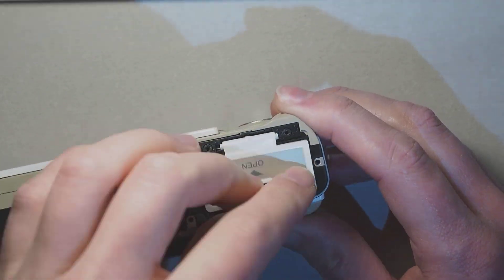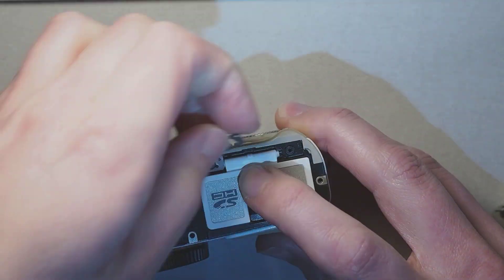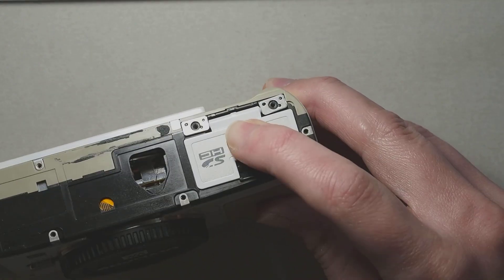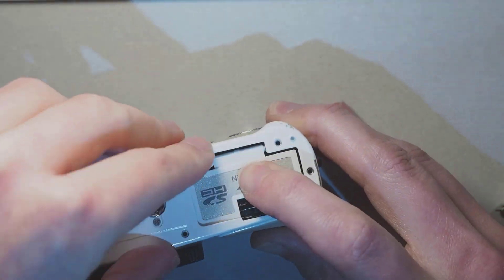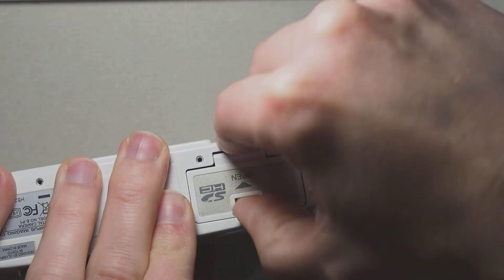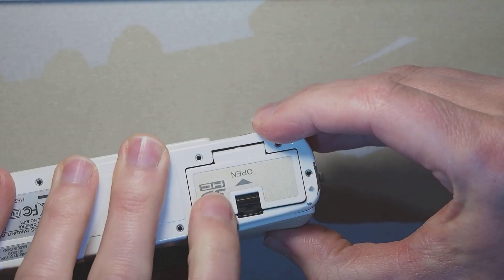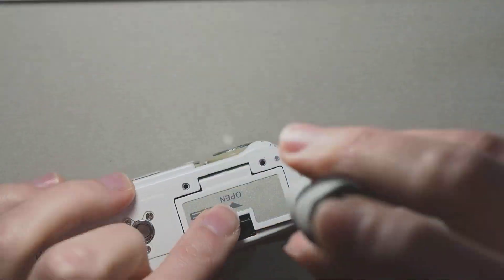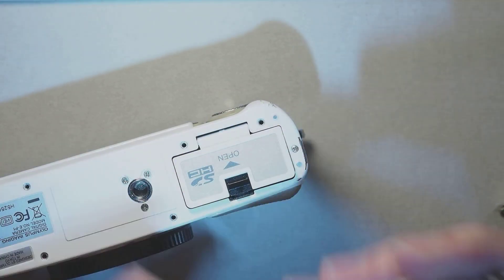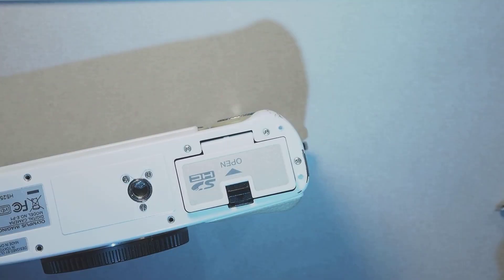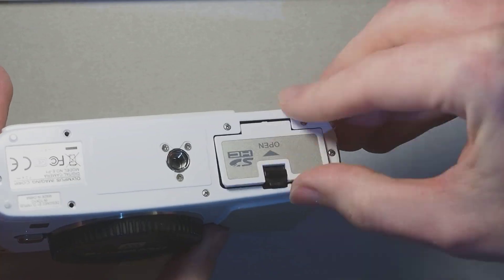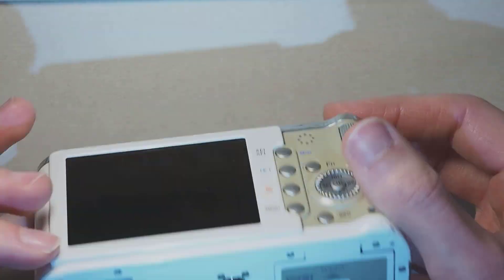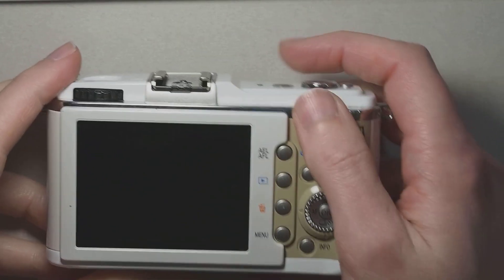The only other noteworthy bit of reassembly is figuring out which way these pieces need to go in so that the battery door springs open when you unlatch it. Right, back in with the last couple of screws. Now, let's test it.